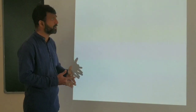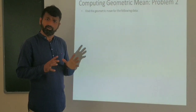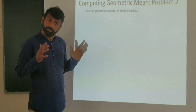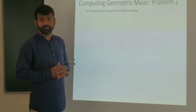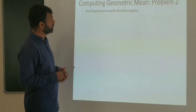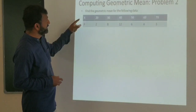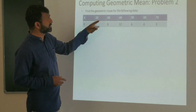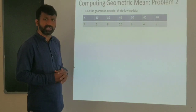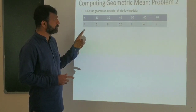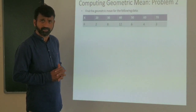Let us move to the second problem. In this problem I have taken temperature data, and frequencies are also given. The x values are 20, 30, 40, 50, 60, 70, and the corresponding frequencies are 2, 8, 2, 1, 6, 4, 3, totaling 40 as the frequency total.